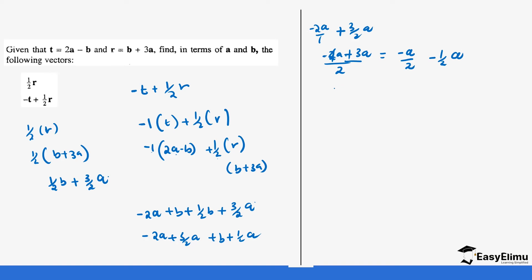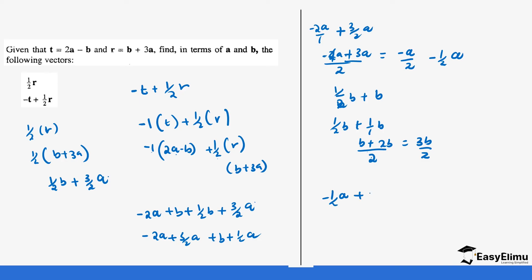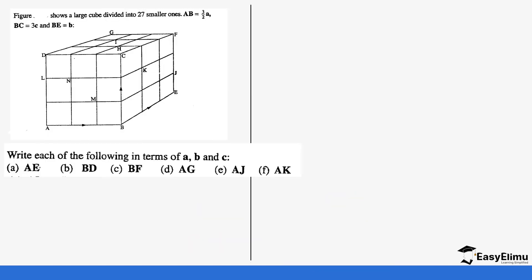For the b terms: negative ½b plus b, which is the same as negative ½b plus 1b over 1. The LCM is 2, so 2 divided by 1 gives 1b plus 2 divided by 1 gives 2b, which gives 3b over 2. So our final answer is negative ½a plus 3/2b.